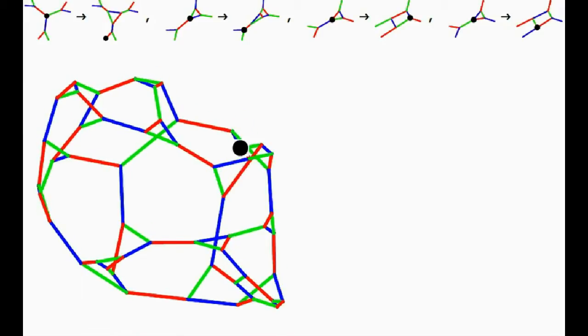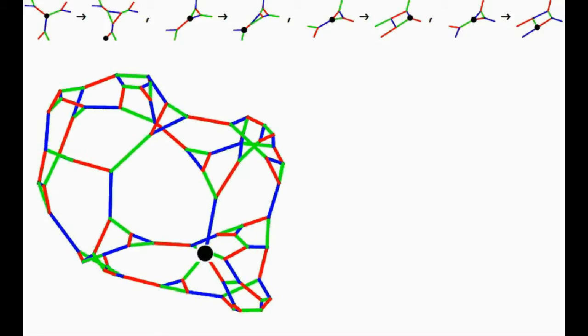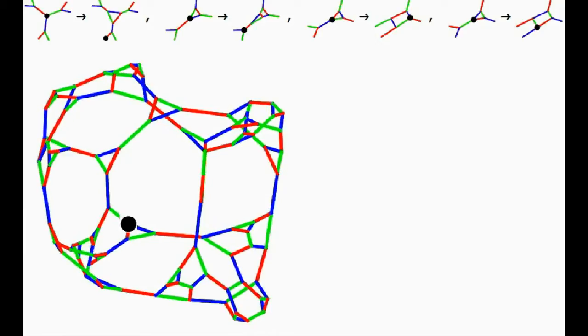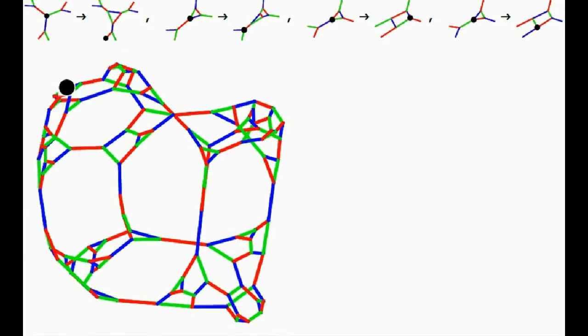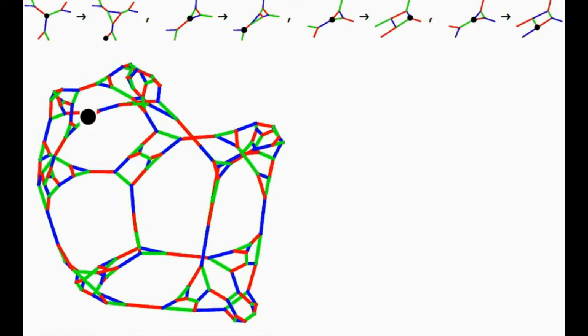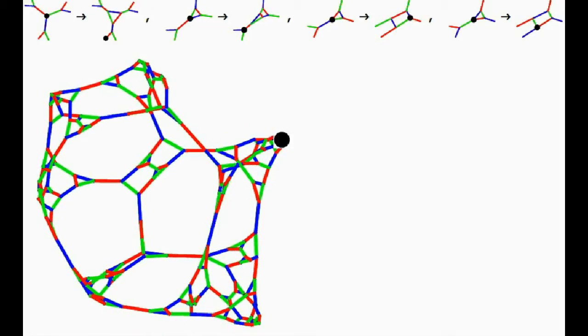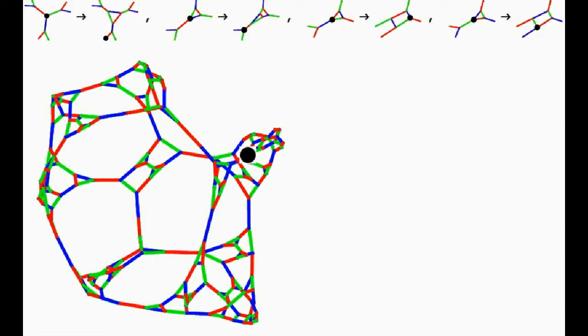But it's just remarkable how by just starting from a little cube and just by following these four little rewrite operations, we can get this massively complex network generated. This movie just shows what happens over the first 300 time steps, but you just saw the result of what happens after 100,000 time steps.